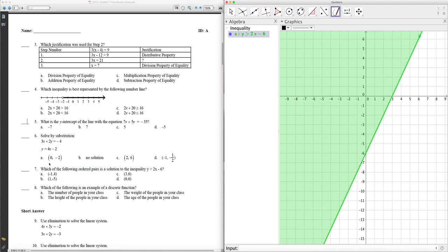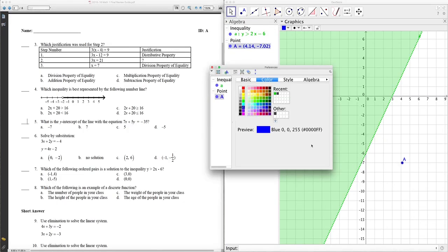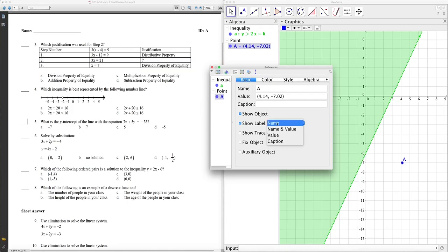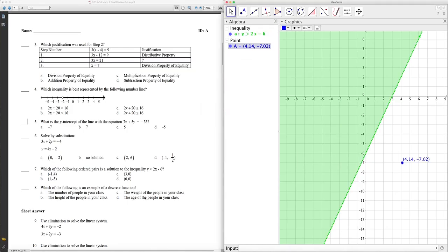And then it says, which of the following ordered pairs is a solution to the inequality? So, this ordered pair, ordered pairs are, it's a point. So, let's go to a point here, right? Let's click on the graph, and there's a point. And I want to see the coordinate of that point. So, I'm going to go to object properties, and let's go to basic. Let's go name and value. So, a solution, right? A solution to this inequality means that the point has to be in the shaded region. That's what it means. So, let's go to negative 1, 4. Negative 1, 4. That's up here. Hey, that's a solution. Because it's in the shaded region. You see that?